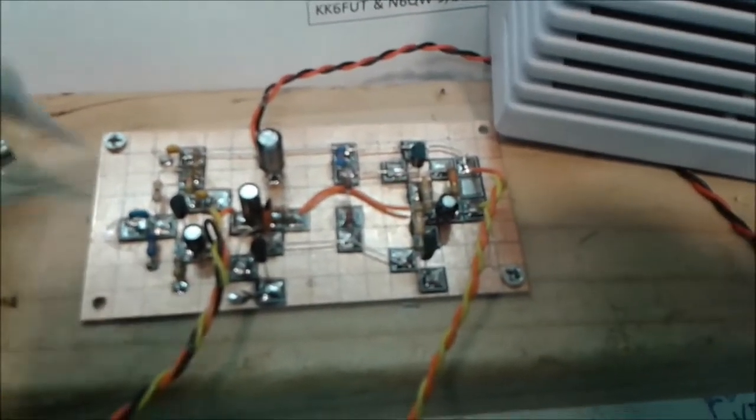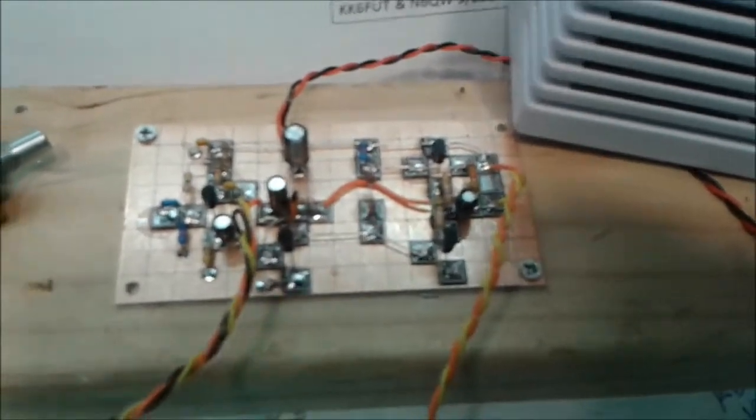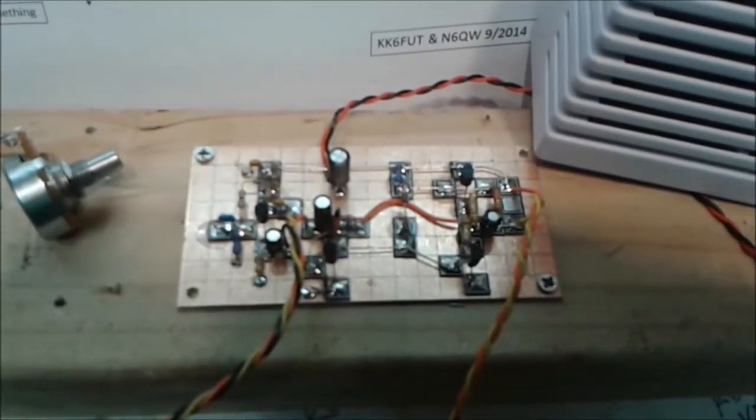That's going to be a good amp for our Let's Build Something direct conversion receiver. Again, this is Pete, N6QW.